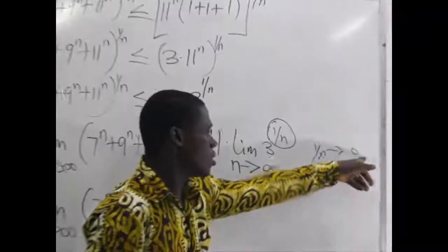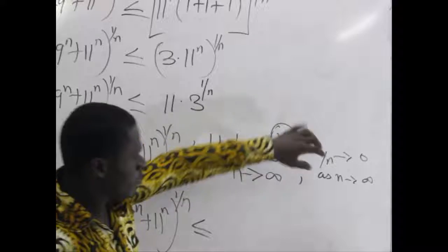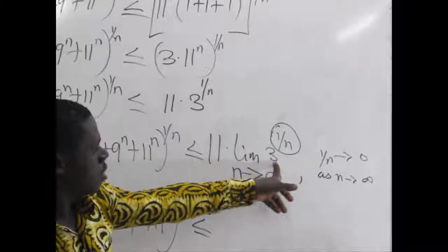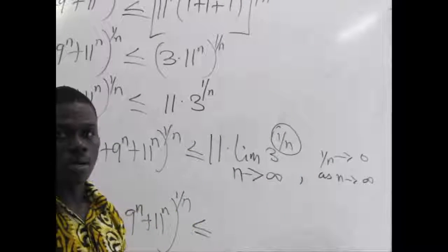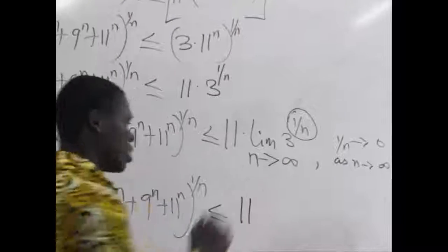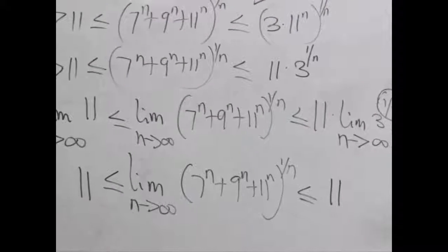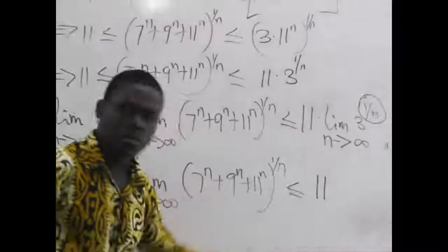We realize that 1/n approaches 0 as n approaches infinity. As this is approaching 0, realize that 3 raised to the power 0 is 1, so 1 multiplied by 11 produces 11 as the result. So the limit to this side is 11, and the limit here is also 11.